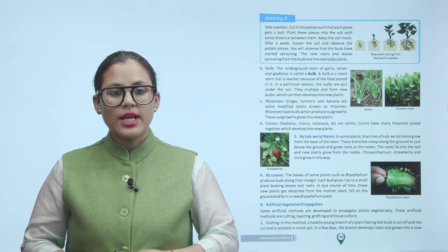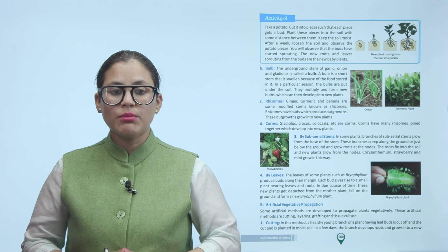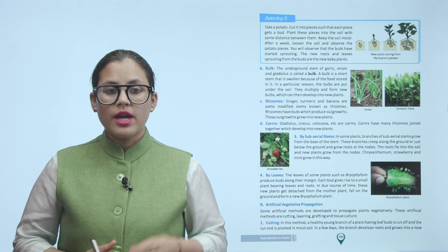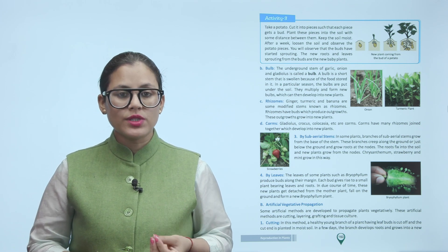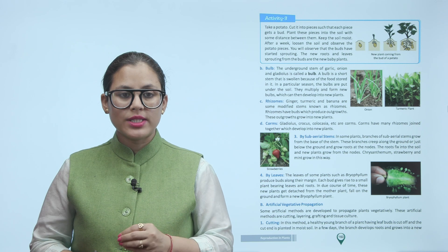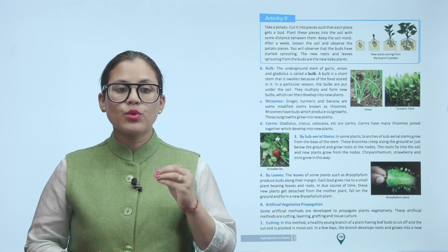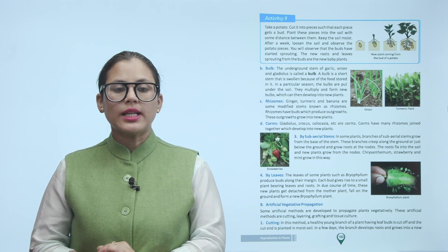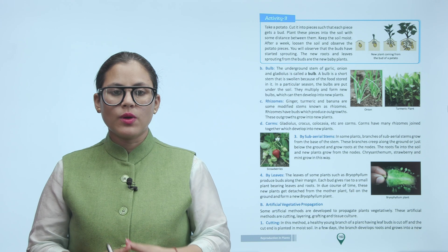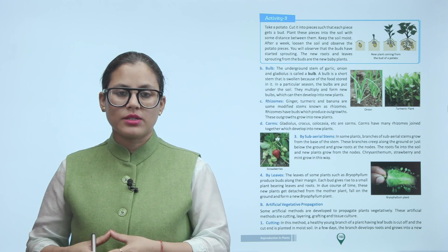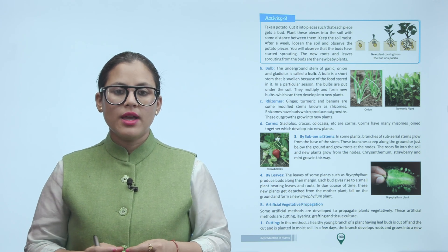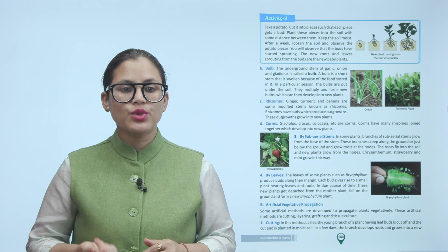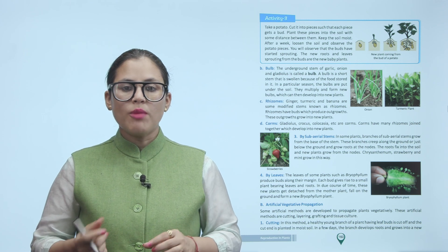Rhizomes — ginger, turmeric, and banana are some modified stems known as rhizomes. Rhizomes have buds which produce outgrowths; these outgrowths grow into new plants. Corms — gladiolus, crocus, colocasia, etc. Corms have many rhizomes joined together which develop into new plants.